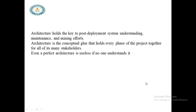The architecture is the conceptual glue that holds every phase of the project together for all its stakeholders. The project contains different components for different users, but these components are not isolated — they are all integrated with each other. For example, in online banking, the ATM module is linked with the banking manager module, which is linked with the RBI staff module. The documentation describes all these components and how they interact and communicate with each other.